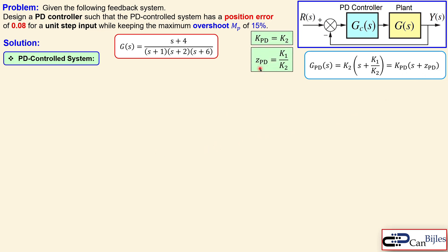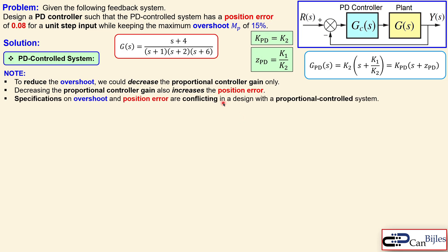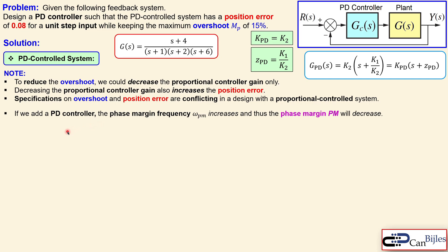One might consider simply reducing the proportional gain to reduce the overshoot — for example, decreasing from 34.5 toward 30. However, decreasing the proportional gain also increases the position error, so the overshoot and position error specifications are actually conflicting. We cannot satisfy both using only a P controller, which motivates the use of a PD controller.